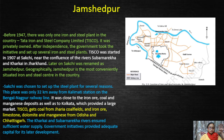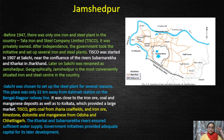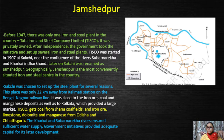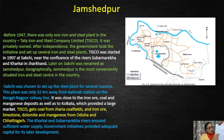In the second paragraph, Sakchi was chosen to set up the steel plant because of the facilities provided to help the iron and steel industry establish and flourish. The light blue color portion states: this place was only 32 kilometers away from Kalimati station on the Bengal Nagpur railway line. You can see a railway line in this diagram — a black color line which is dashed — that is a railway line.